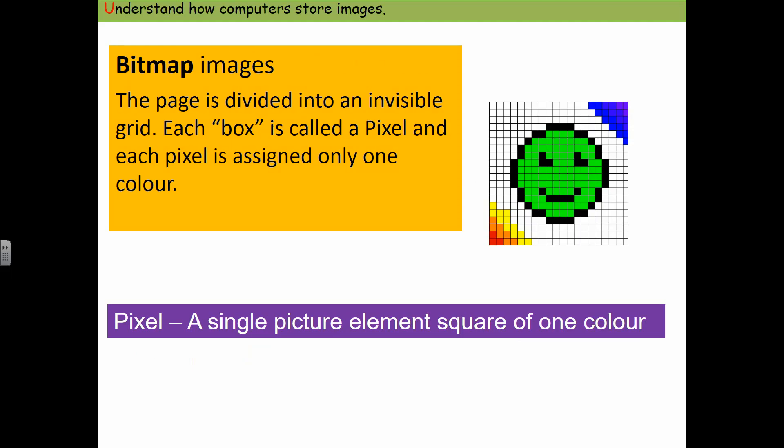A bitmap image means it will look at an image, put a grid over the top of it so it gets lots of boxes, and then color each box in depending on what color it can see on screen. Each of those boxes is called a pixel—a single picture element—and each one can only be one color. Your computer's got to decide how big to do this grid and how good you want this picture to look.